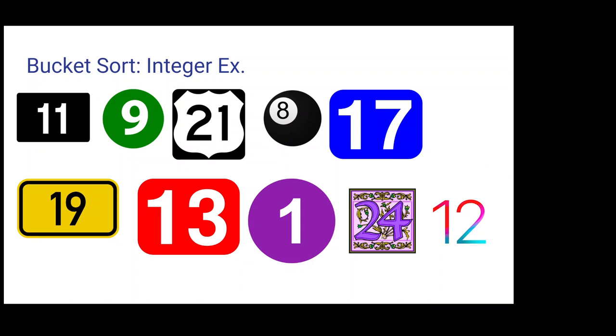We'll start with an example. We have elements 11, 9, 21, 8, 17, 19, 13, 1, 24, and 12. Clearly they're not in any order, definitely not in ascending or descending order. For today's example, we're going to get them to be in ascending order using the bucket sort algorithm.